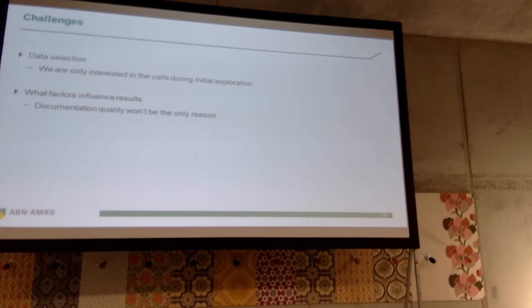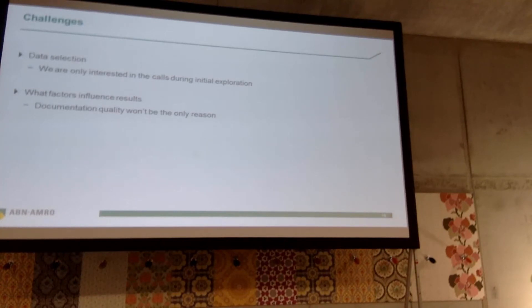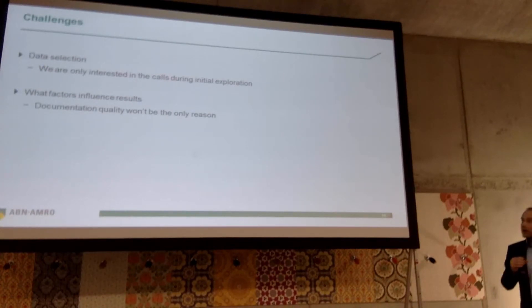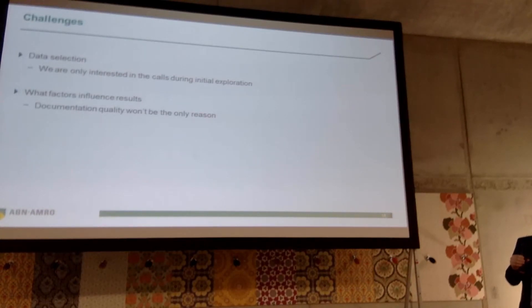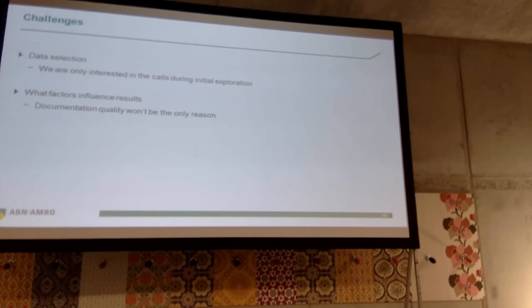These are just examples using clean dummy data to prove a point. In reality, it may be a little bit more difficult to do some data selection, because we are interested mainly in the initial experience that a developer has — that will show how he is able to learn how to use our API. So we need to see how we can select only that data. The documentation, the developer portal, and the API itself are probably not the only factors that will influence the results — we also have to take into consideration that a less experienced developer may run into issues that we can maybe not solve for him.